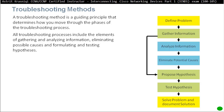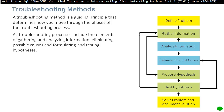You propose one hypothesis, test it by making a change, and if that didn't fix it, go back and undo what you just did. Then you can eliminate more potential causes, gather more information, and start the process again. The time you spend on each phase can be significantly different from person to person.